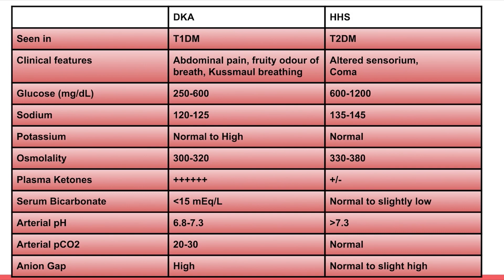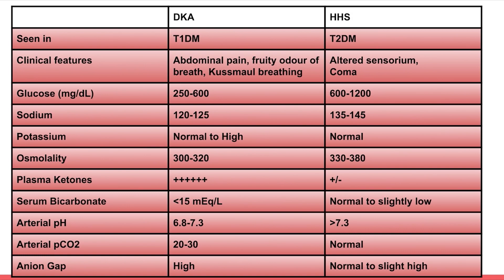Comparing DKA with HHS — Hyperosmolar Hyperglycemic State: DKA is mainly seen in type 1 diabetes while HHS is seen in type 2. DKA presents with abdominal pain, fruity odor, and Kussmaul breathing, whereas HHS presents with altered sensorium and coma, more commonly in elderly patients. Glucose in DKA is 250 to 600 mg/dL, while in HHS it is 600 to 1200 mg/dL.